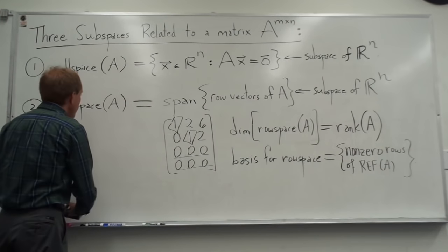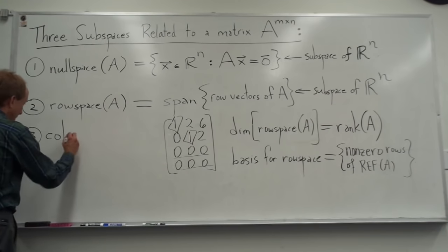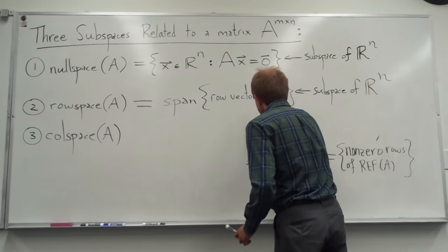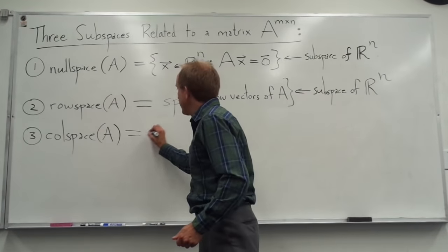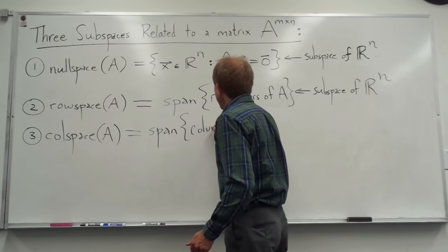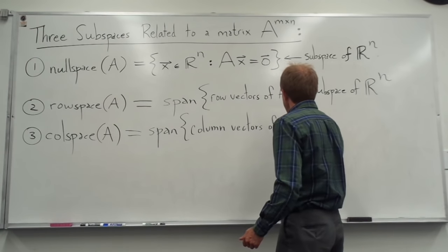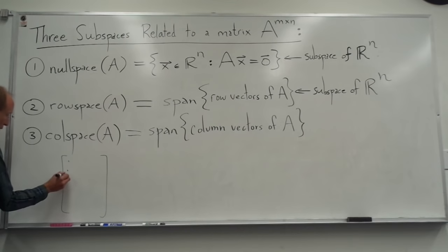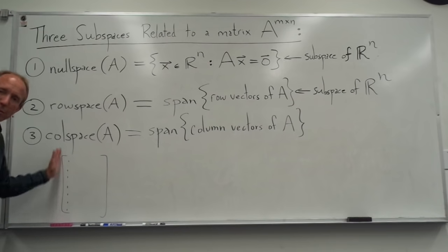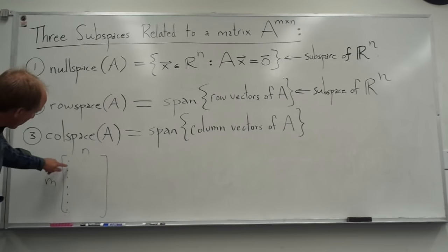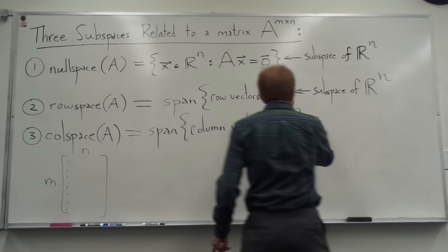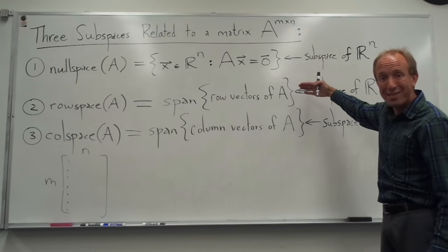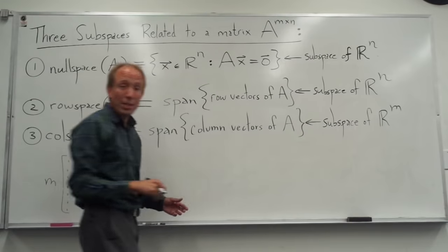The last subspace is the column space of A, written as col(A). The column space is simply the span of the set of column vectors of matrix A. In this case, since each column of an m by n matrix has m entries, the column space is a subspace of R^m — that's a difference from the other two spaces. It's still a subspace because it's the span of something.